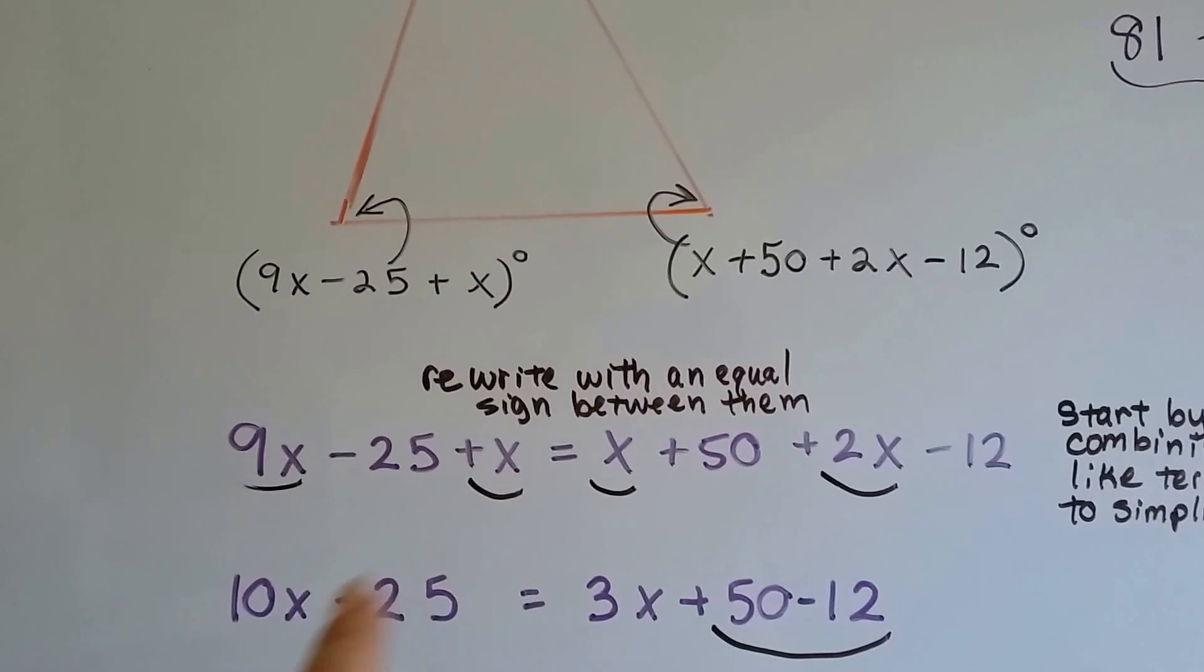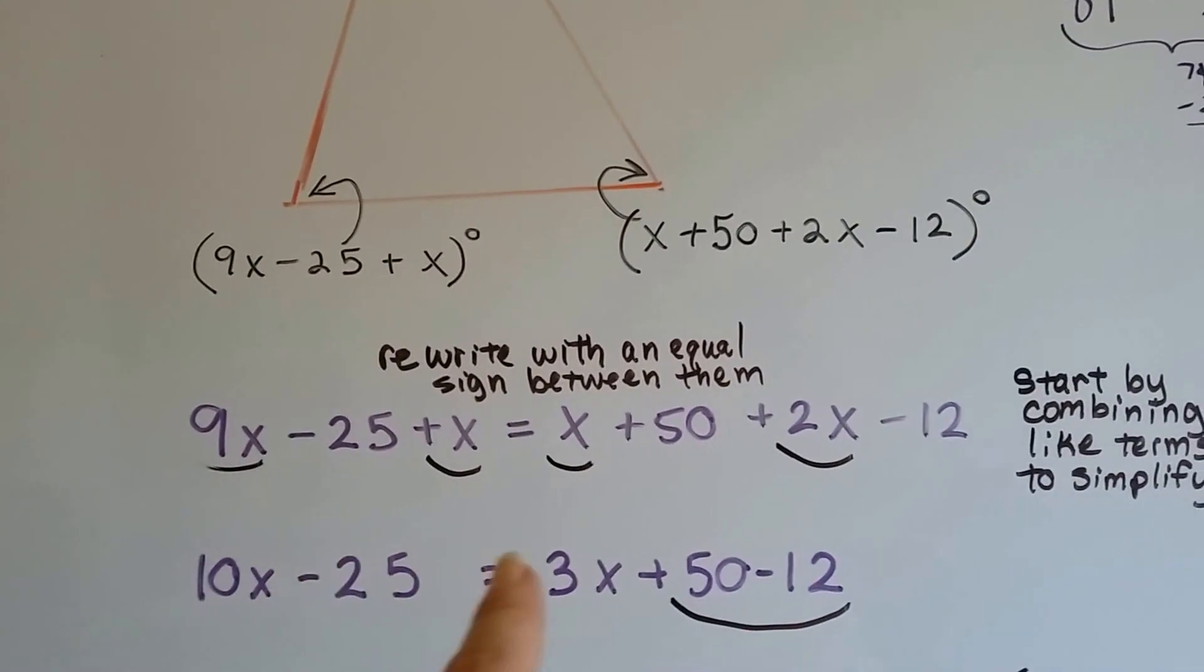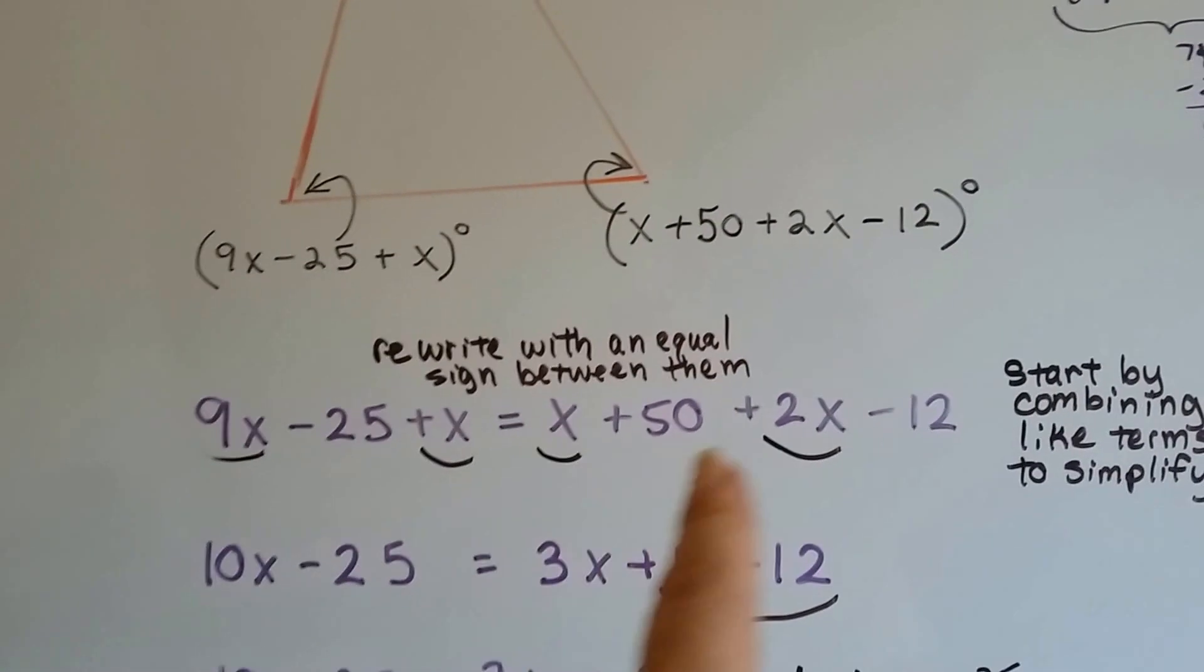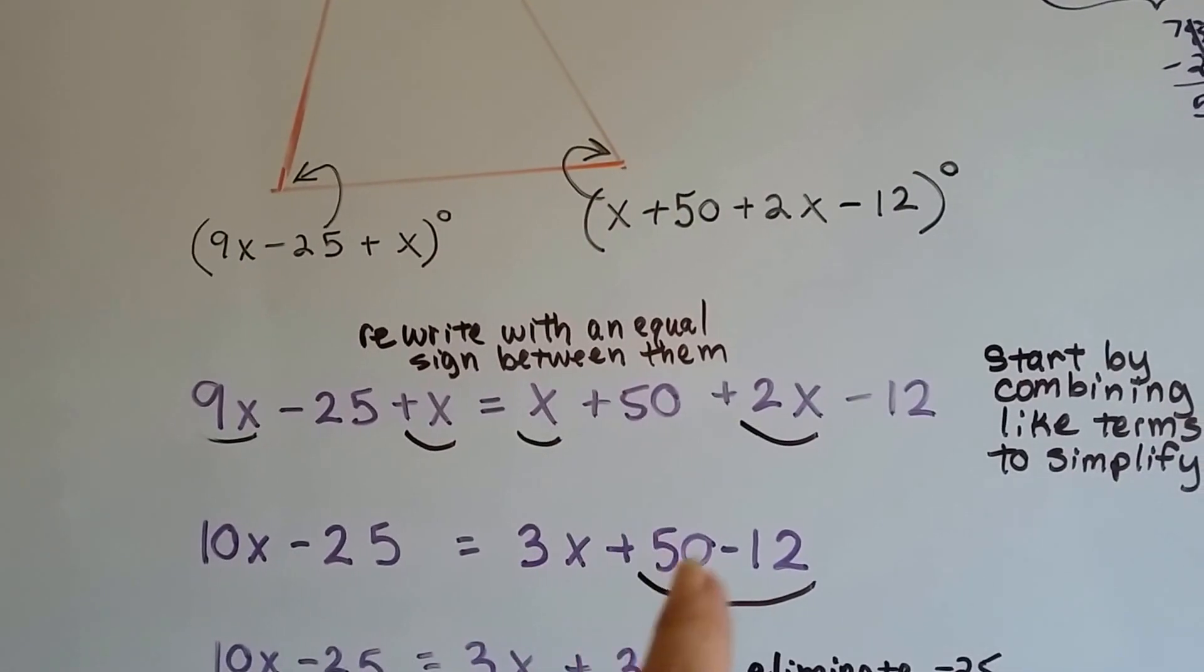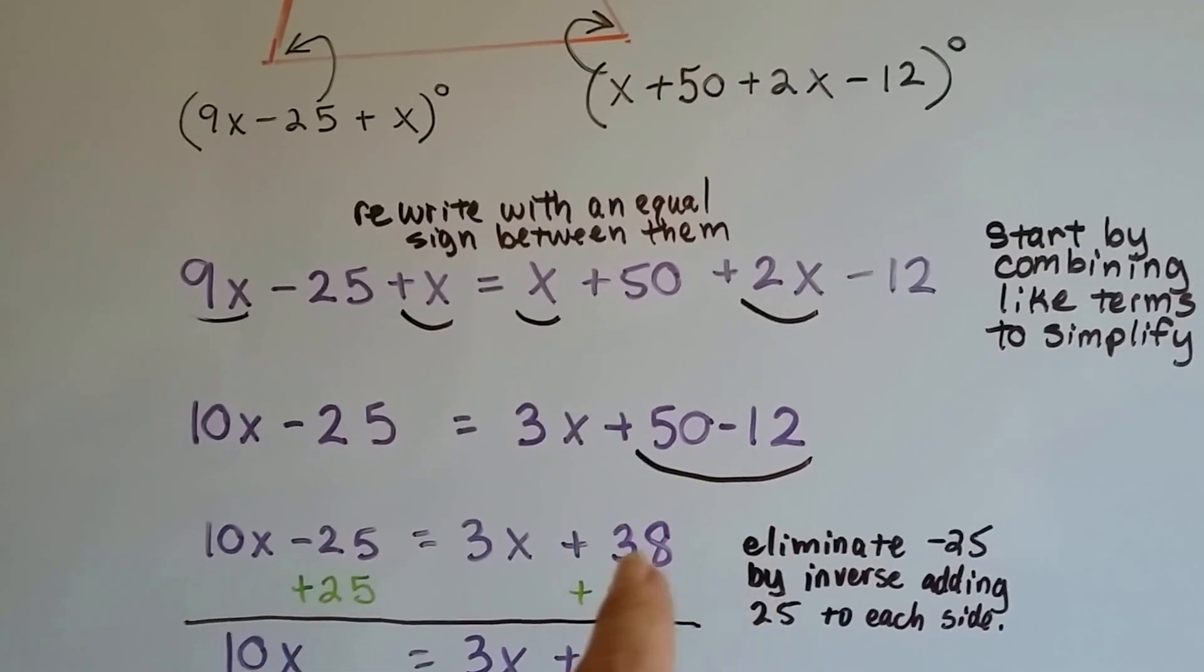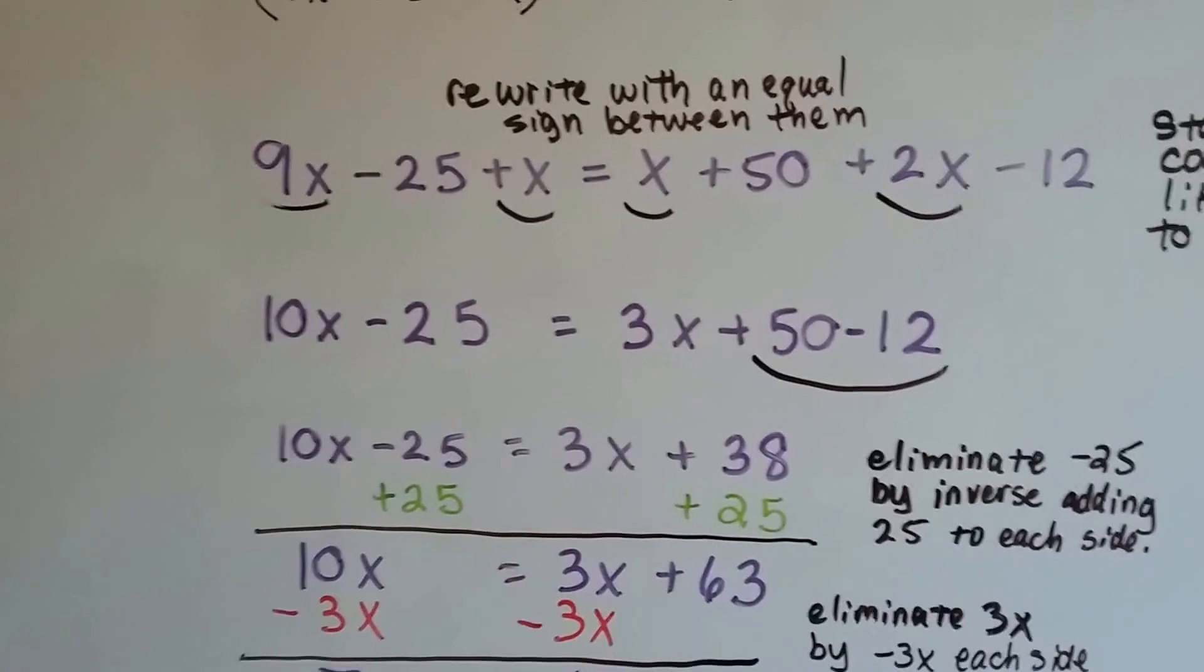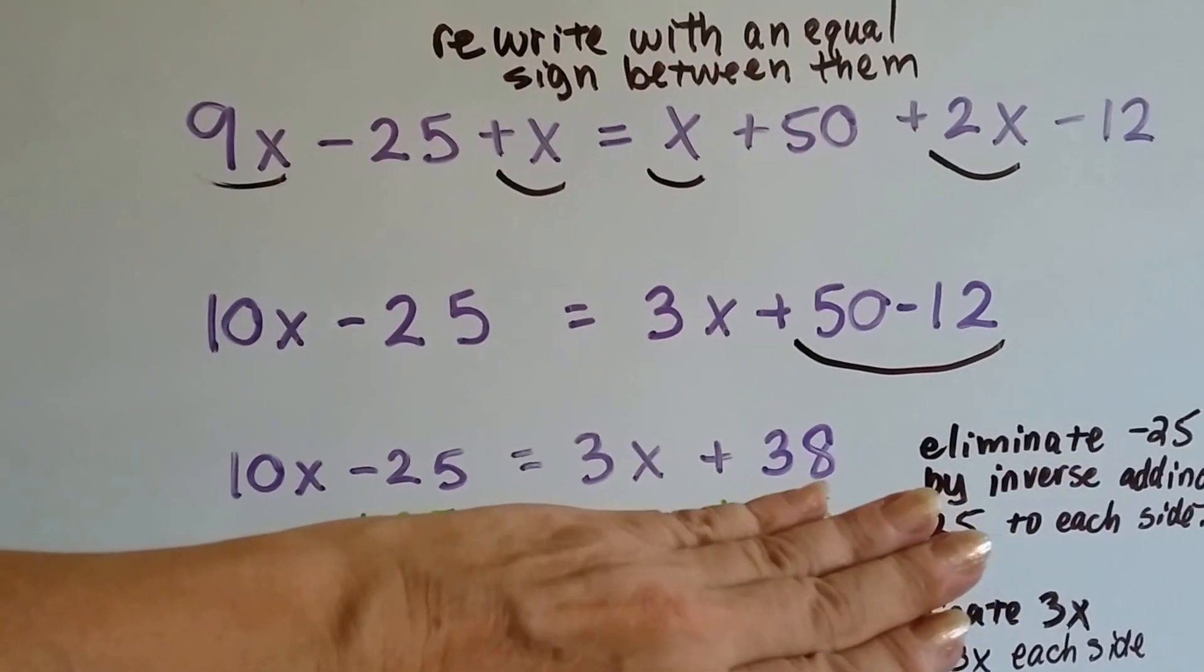That 9x and that x can get together to become a 10x. Now we have 10x minus 25. And on this side of the equal sign, this x plus this 2x makes 3x. So we have 3x plus 50 minus 12. We combine this, and 50 minus 12 is 38. That's our new equation: 10x minus 25 equals 3x plus 38.